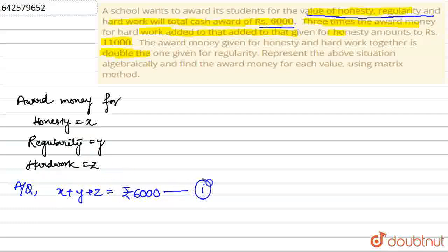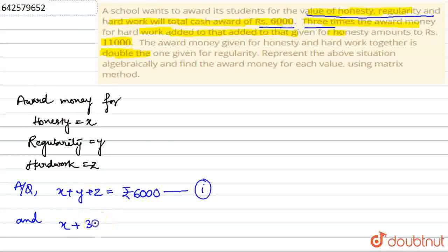Next, it is given that three times the award money for hard work added to that given for honesty amounts to rupees 11,000. So we can write x plus 3z equals rupees 11,000. This is equation 2.